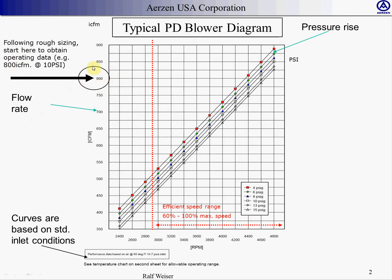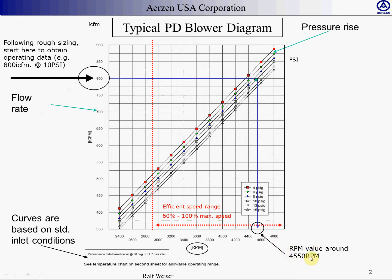Once you know what flow you want, you draw a straight line over to the pressure rise of 10 psi in this particular case. If it were any different, pick any of these pressure curves based on this legend. Mark the spot where the line of my 10 psi and my flow line cross, and then draw a vertical line all the way down to the RPM. Here you have roughly 4,500–5,000 RPM with this particular machine.